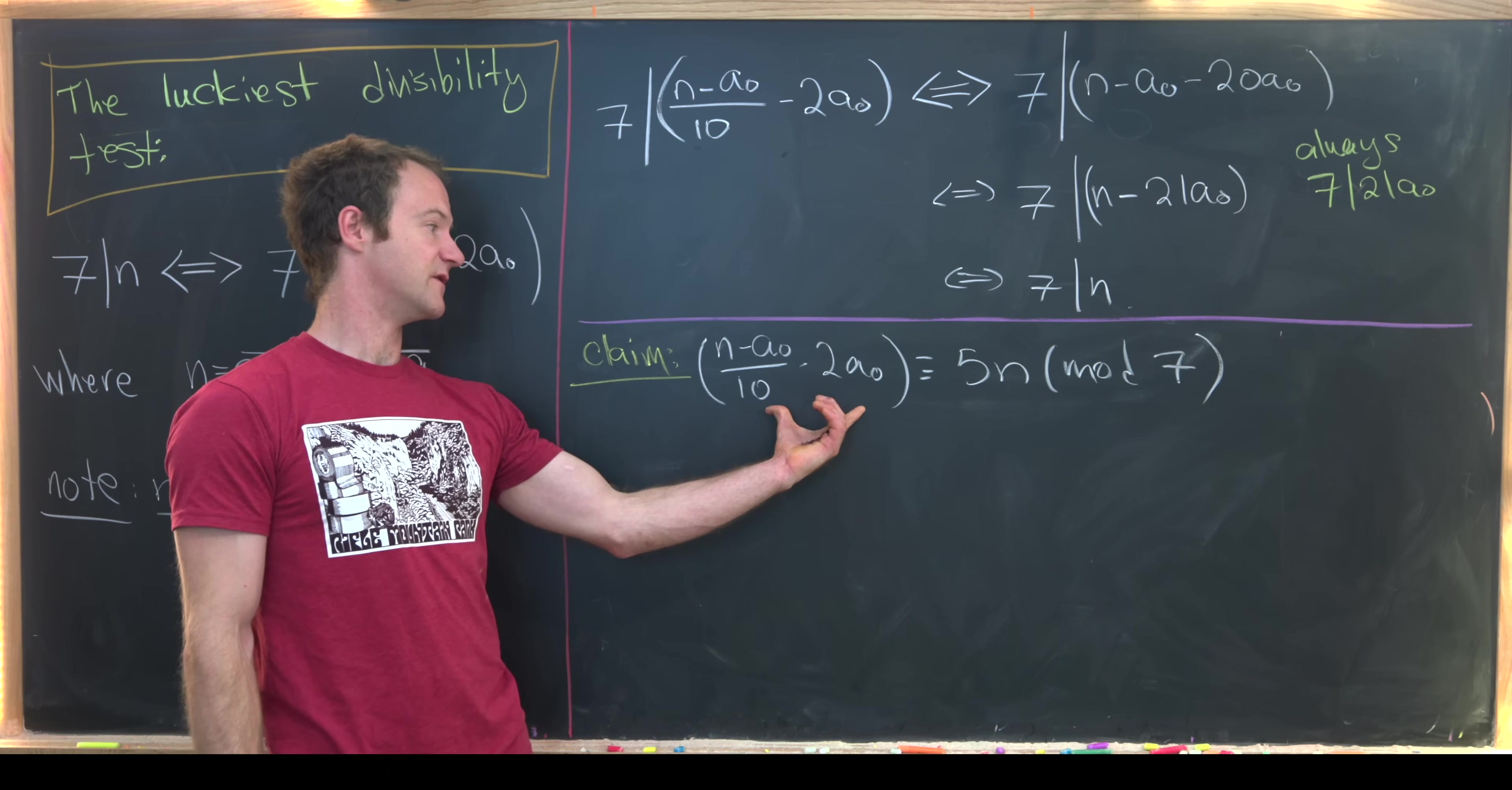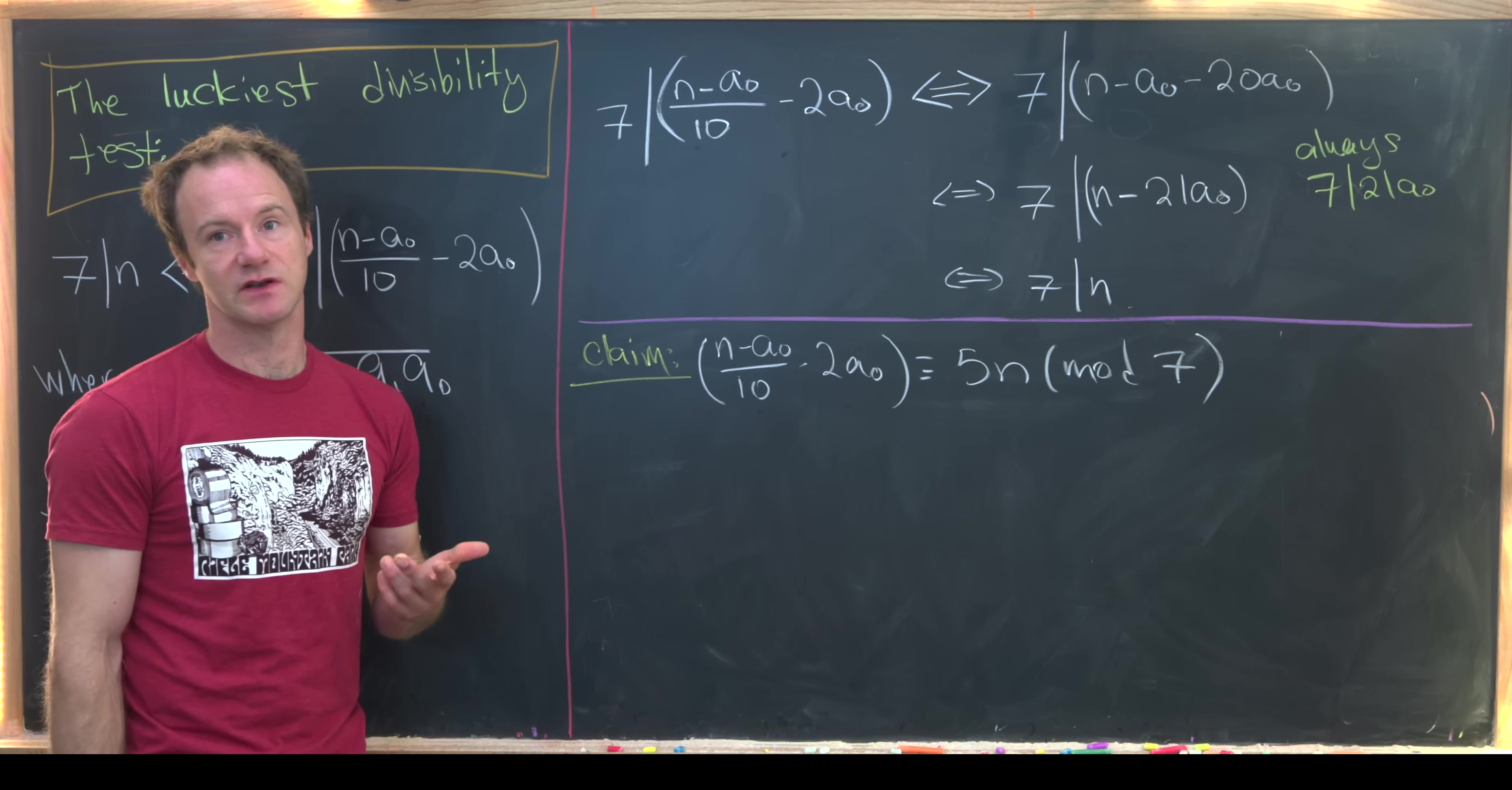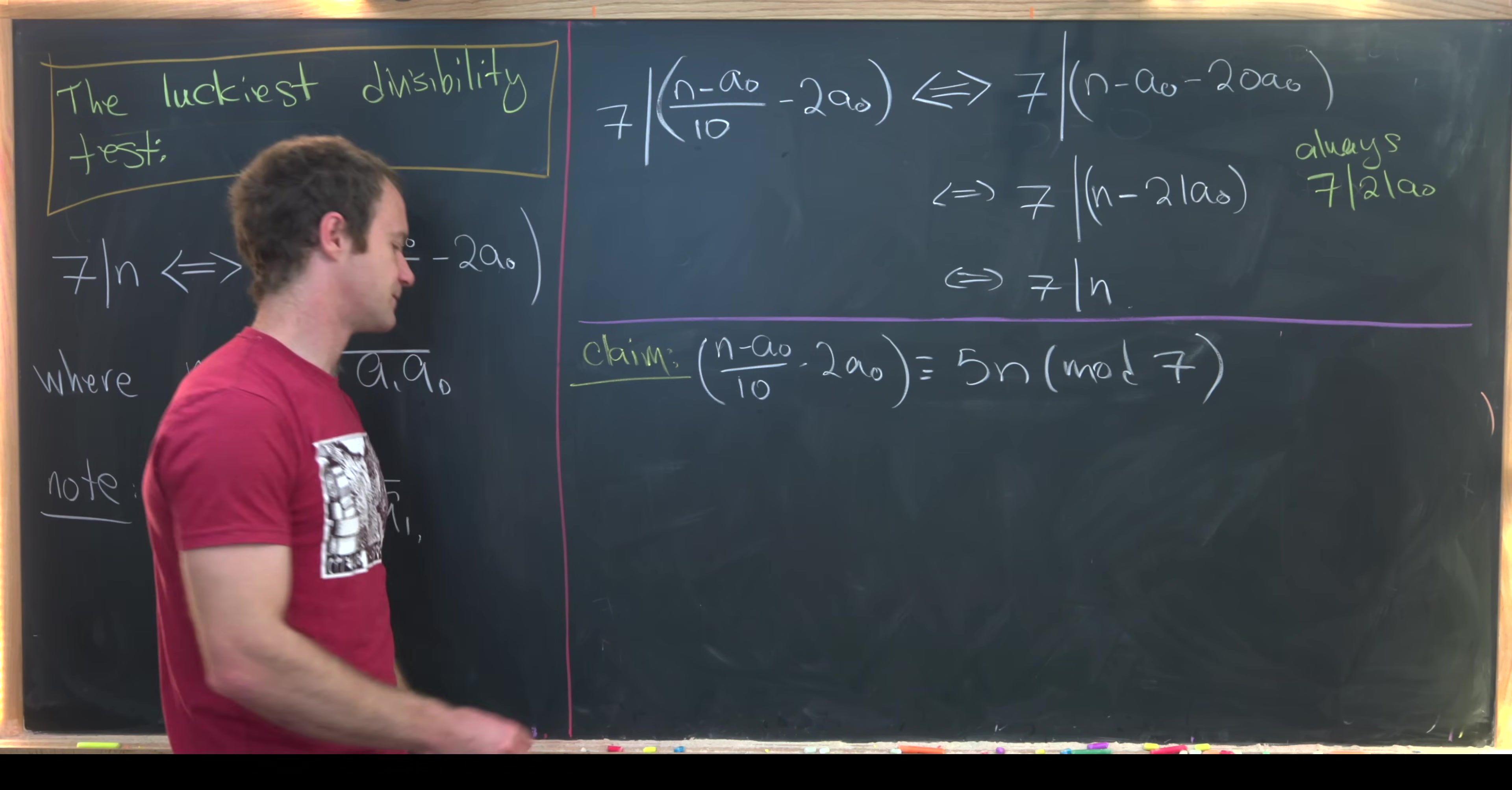But here the remainder of this guy right here and the number n may not be the same. So notice the remainder of this is going to be the same thing as the remainder of dividing 5n by 7, not n by 7. That could be problematic if we were trying to compute n mod 7. But for divisibility, we're okay. Because notice if n is 0 mod 7, then 5n is 0 mod 7. And that makes this thing 0 mod 7. And then vice versa.